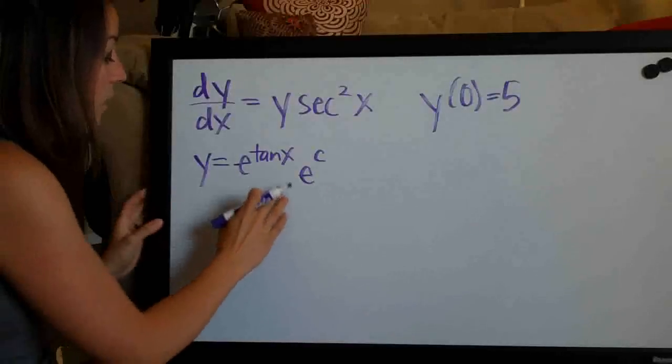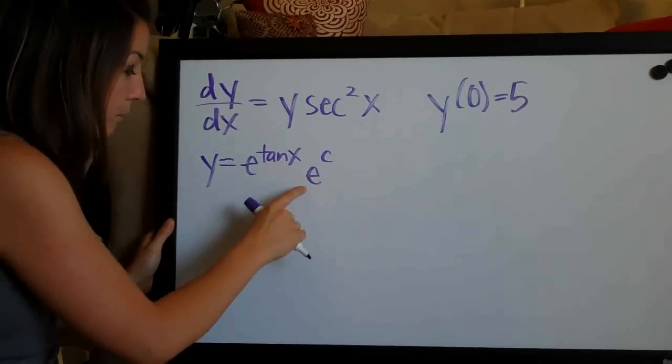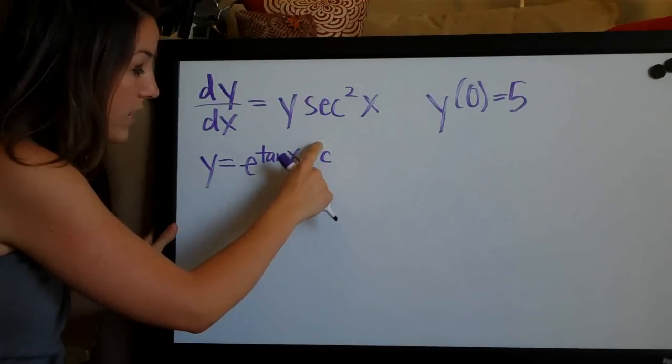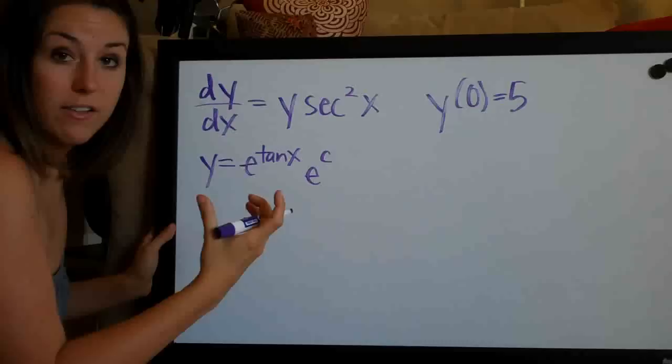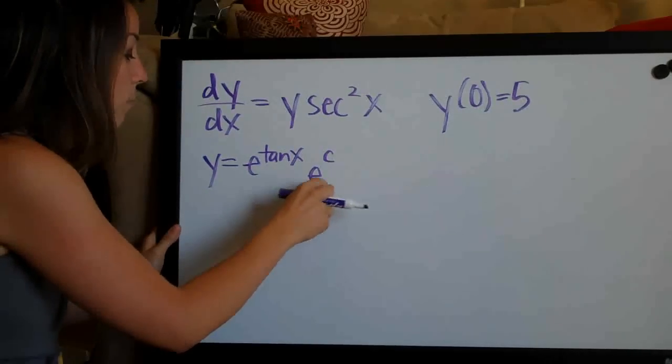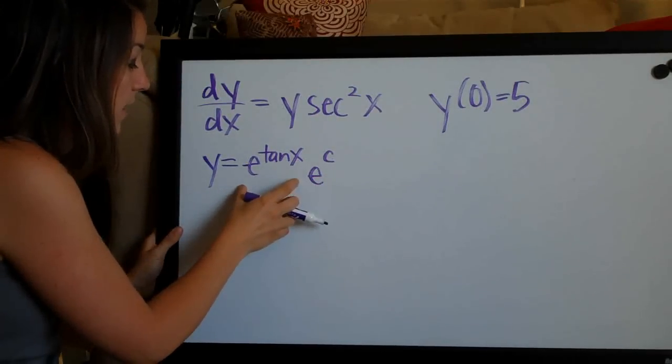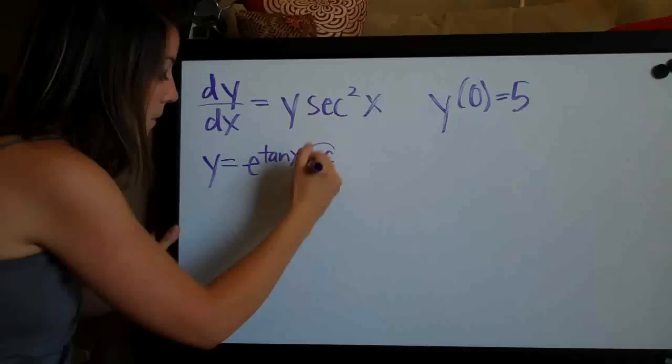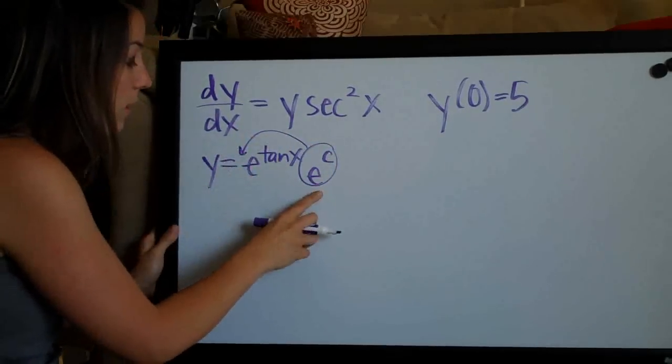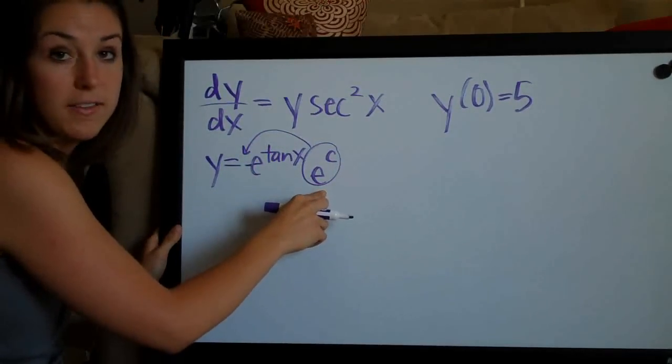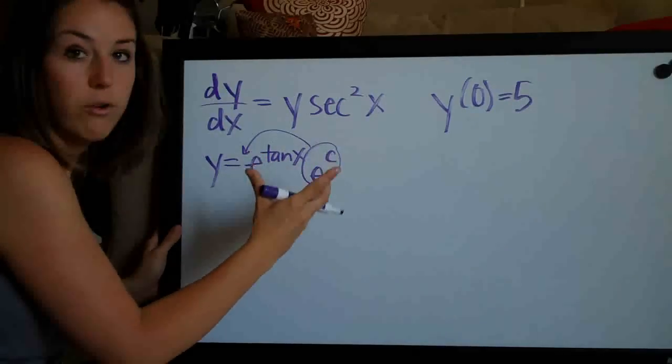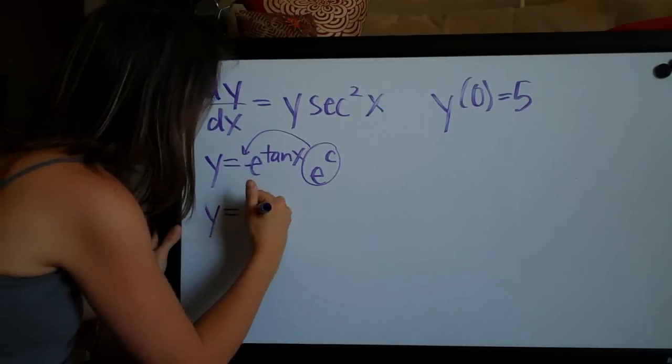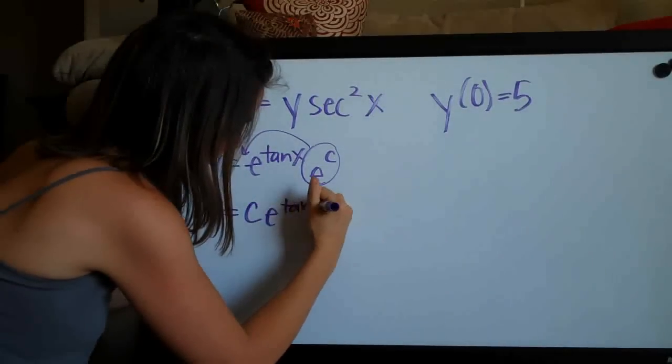So now that we've done this, the reason that we do this is because e to the c is just a constant and our c in here is acting as an area where we can consolidate all of our constants. So because this is just a constant, it's the same thing as saying e to the tan x times a constant. So this is going to become the coefficient. It's going to move out here and we're just going to change e to the c to simply c because c is accounting for the constant in this function. So we'll end up with y equals c e to the tan x.